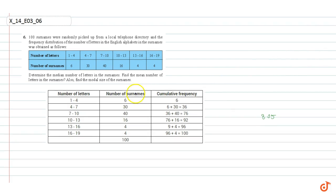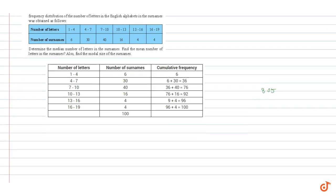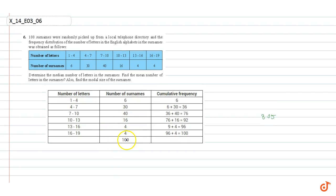A table can be constructed as shown, that shows the cumulative distribution of number of letters. The first two columns are just replicated from the given table. The total number of surnames is 100, so the cumulative frequency just greater than n/2, that is 50, corresponds to the class 7 to 10. So the median class is 7 to 10.